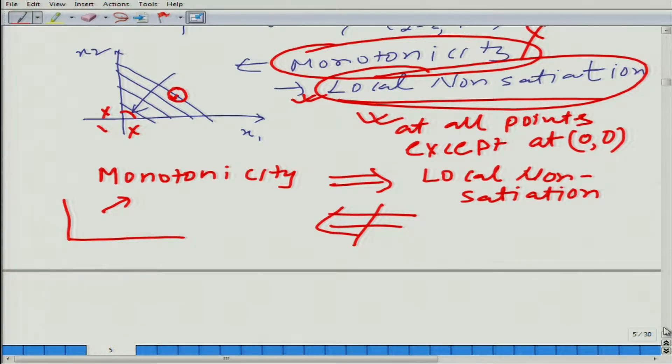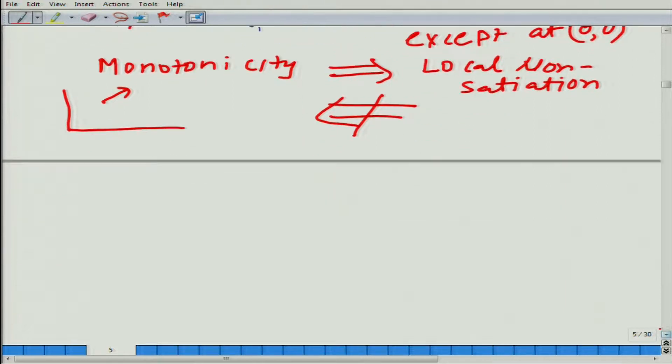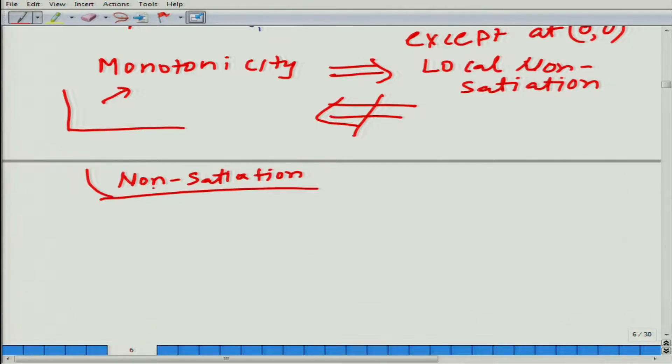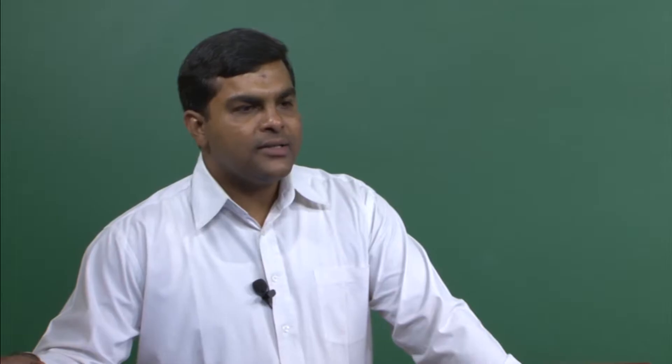Do we always exhibit non-satiation in the real world? Not always. Can you give an example when it is violated? Food — after a certain level, if we eat more, our level of happiness decreases. So there is a finite point that gives us maximum satisfaction. In that case, non-satiation is not satisfied.